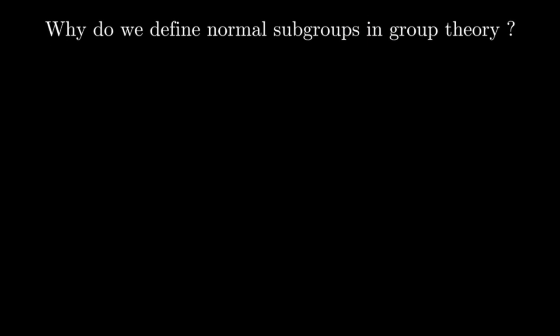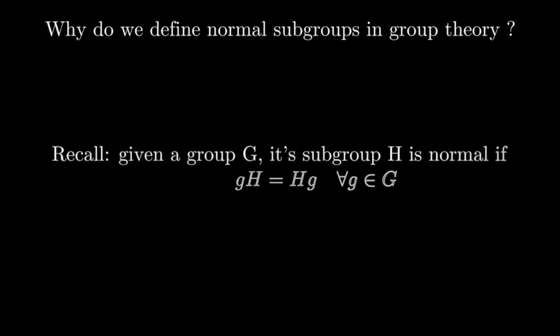Let us recall the definition. Given a group G, its subgroup H is normal if the left coset formed by multiplying by an element g is equal to the right coset for any element g.